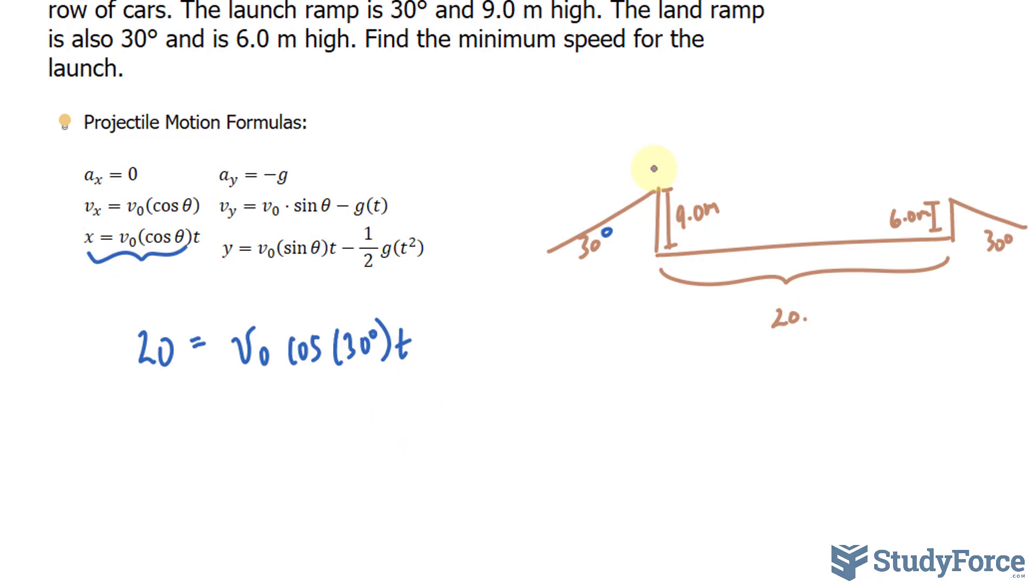Now just before I continue, I want to make note that the person performing the stunt will take on a parabolic trajectory, so they will move in this parabolic motion. The reason why this is important is because all parabolas can be modeled using quadratics.